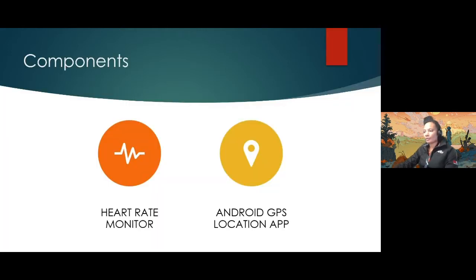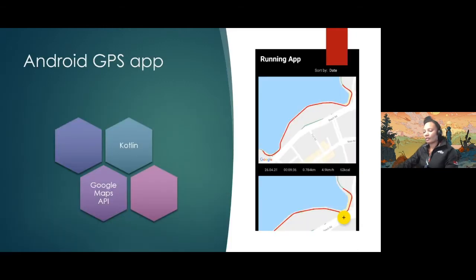The main reason for beginning this project was that I wanted to become more interested in fitness and I had started building an Android app to track the GPS location of runs and hikes. This Android app has been built in Kotlin using the Google Maps API for tracking and viewing the mapped out location of runs. A local database called Room was used to store the hike or run information, which provides a layer of abstraction over SQLite.